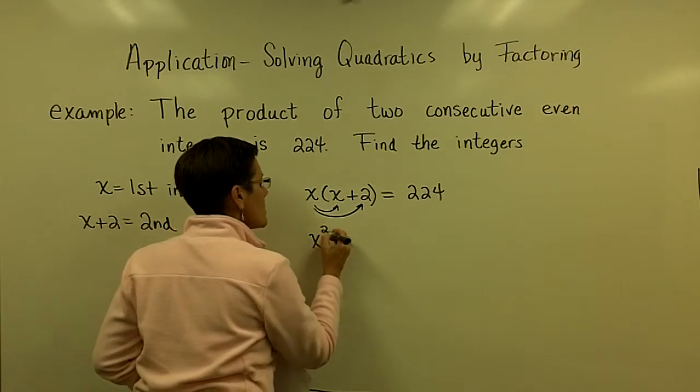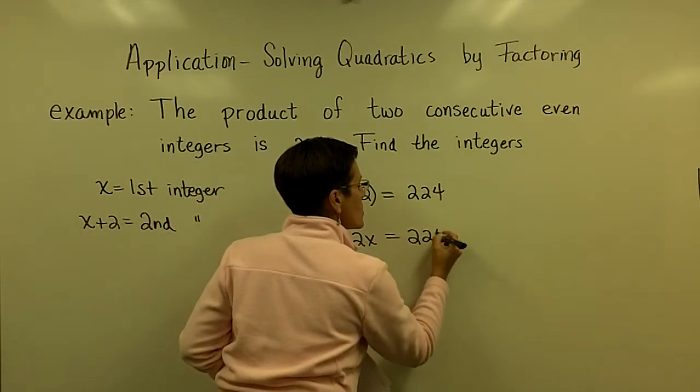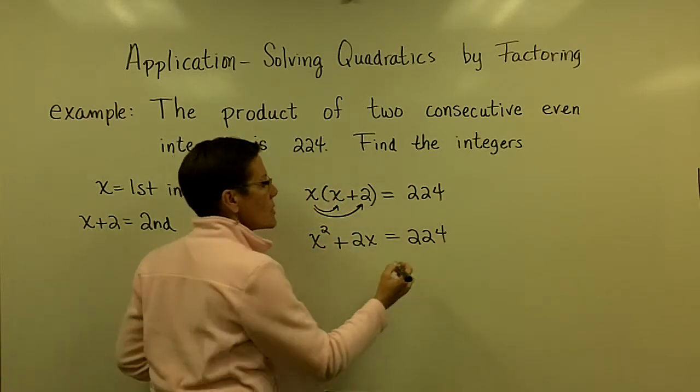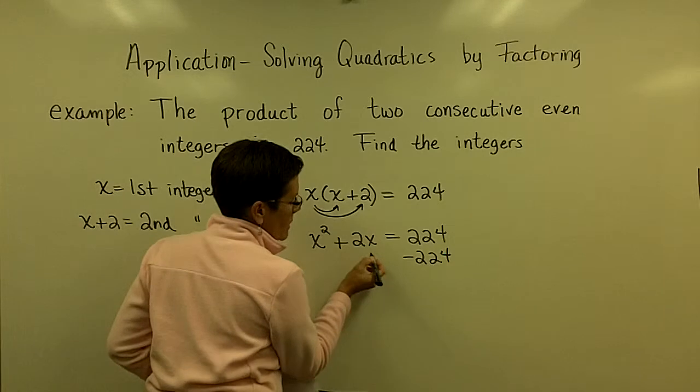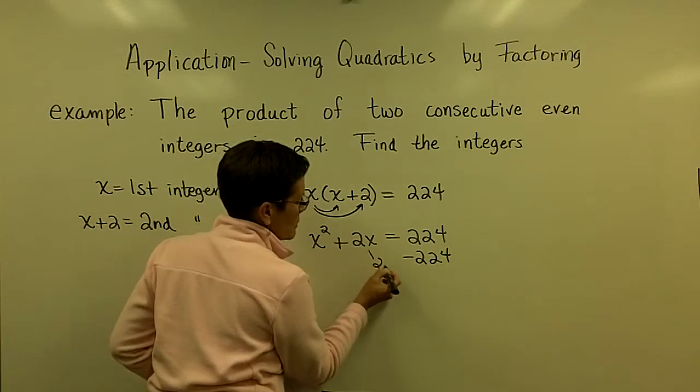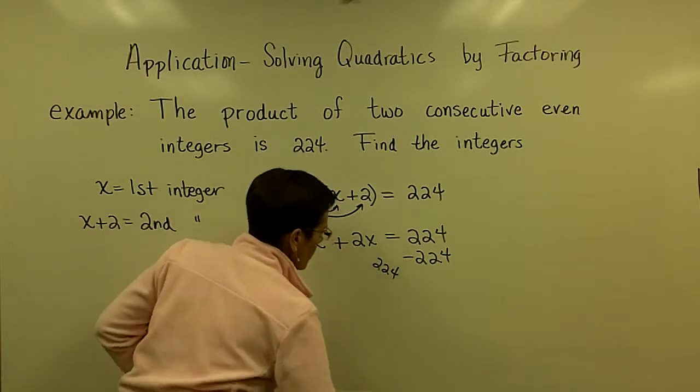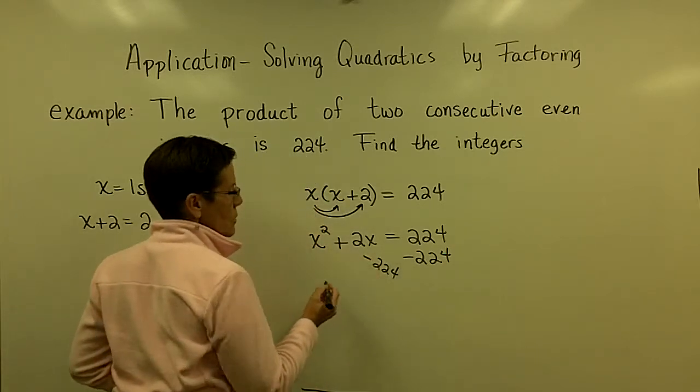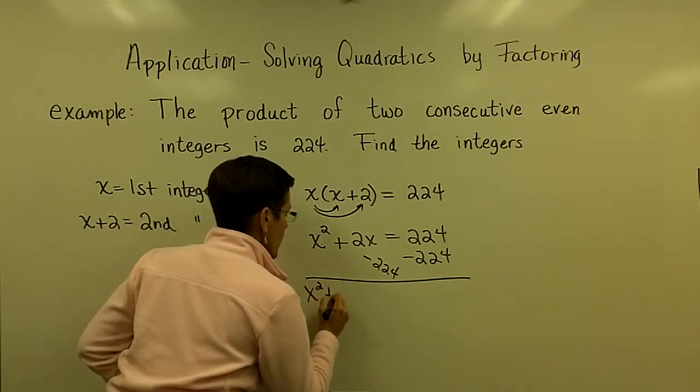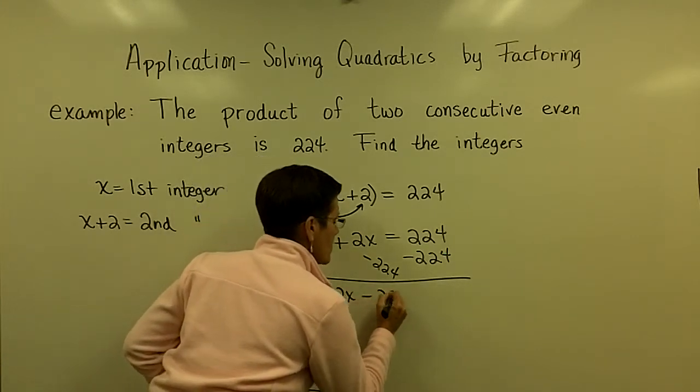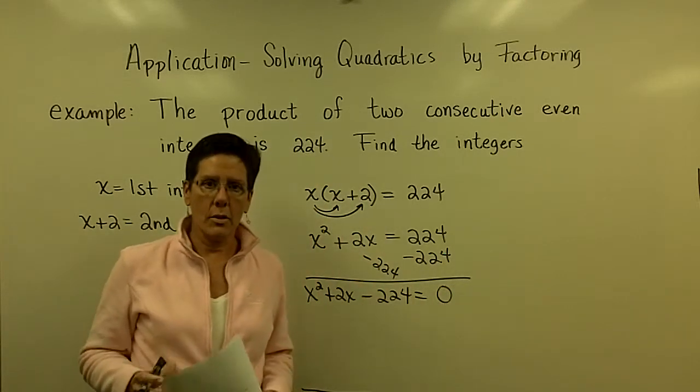I have to clean this up. I absolutely have to clean this up in order to use the zero product rule. And I'm going to show the step this time. I've got to subtract 224. I'm going to kind of show it right here. That's supposed to be a minus sign. Let's do it like this. So, let's subtract the 224. So, over here, I'm going to have x squared plus 2x minus 224 now equals zero. So, I can use that zero product rule.